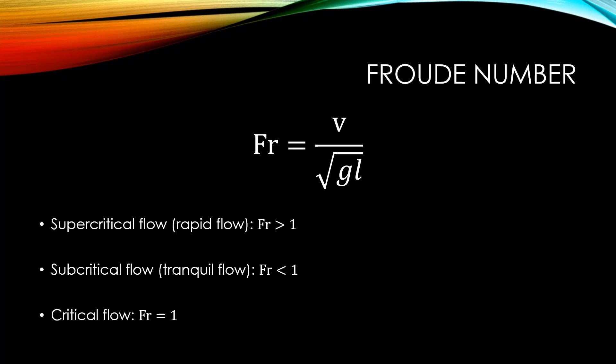There's a third category. When the Froude number equals 1 — that is, when both the inertial and gravitational forces seem to have the same effect on a flow — we call it critical flow.